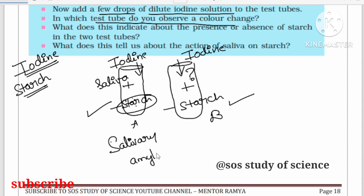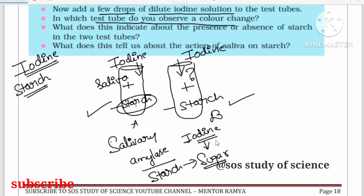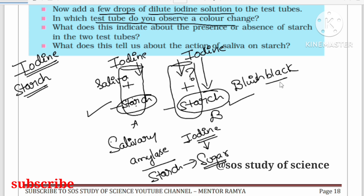Saliva contains the salivary amylase enzyme. This enzyme breaks down starch into sugar. As a result, when iodine is added to test tube A, no color change is seen because there is no starch remaining. But in test tube B, which contains only starch, adding iodine produces a bluish-black color change.